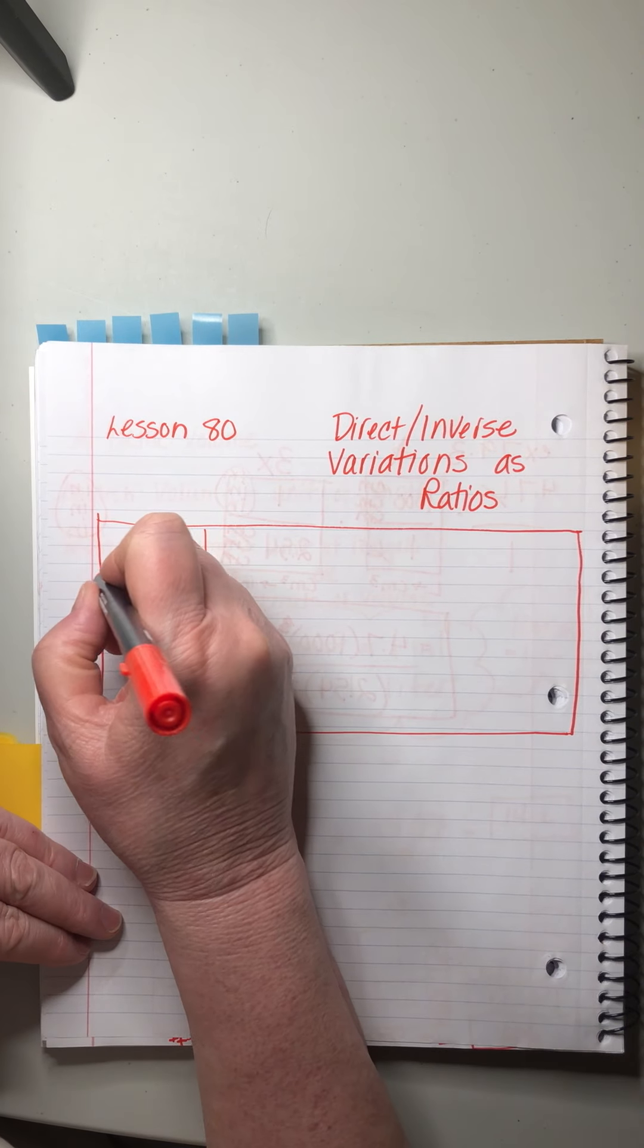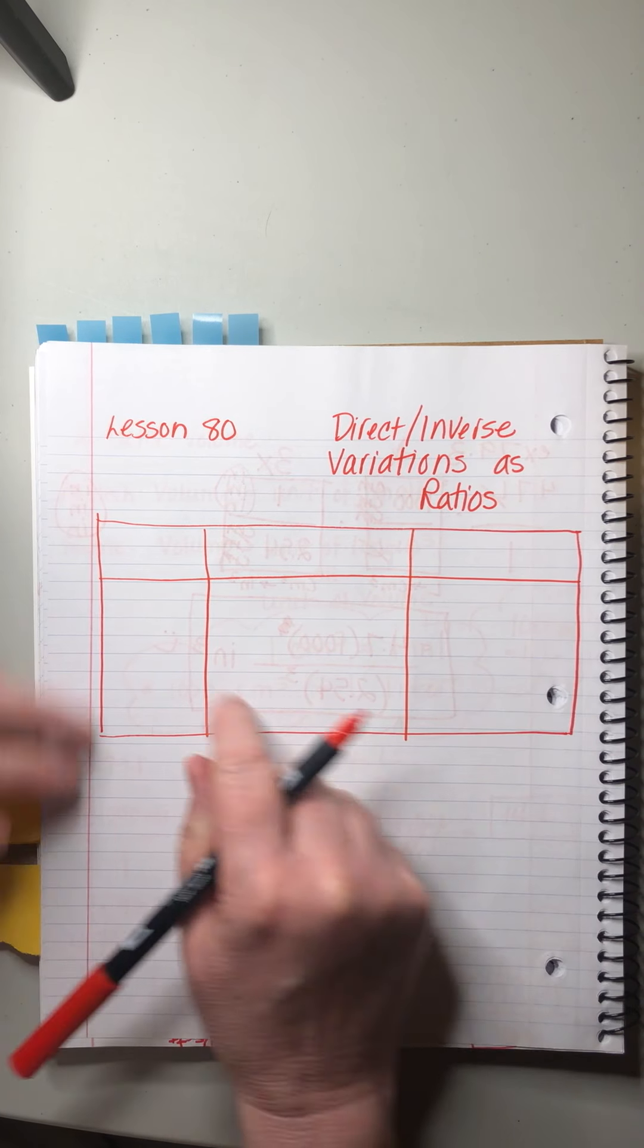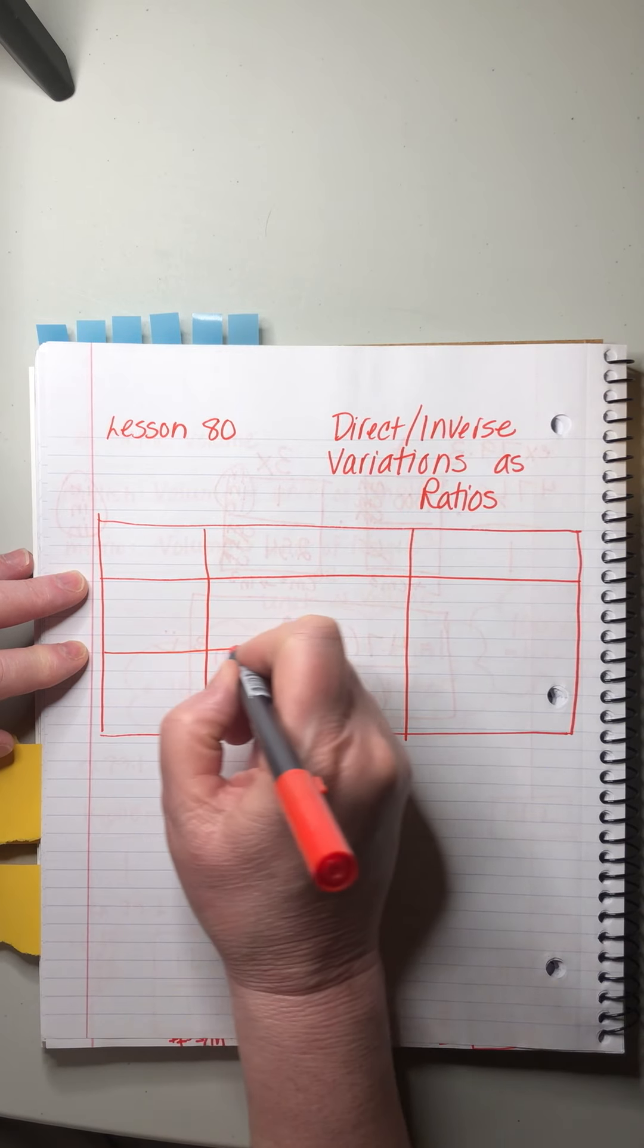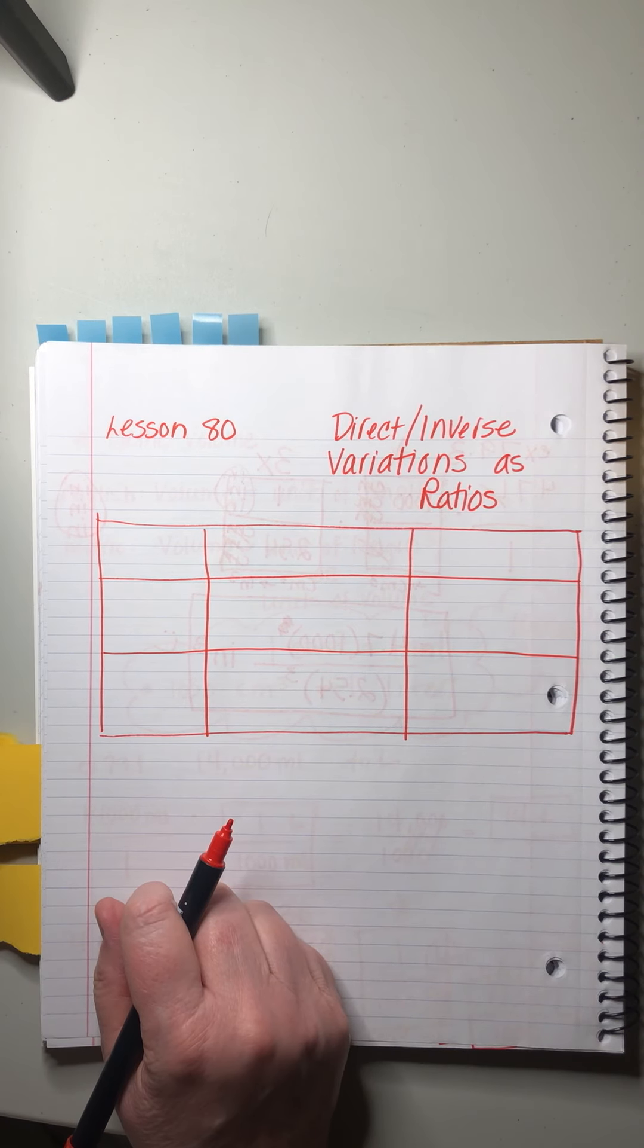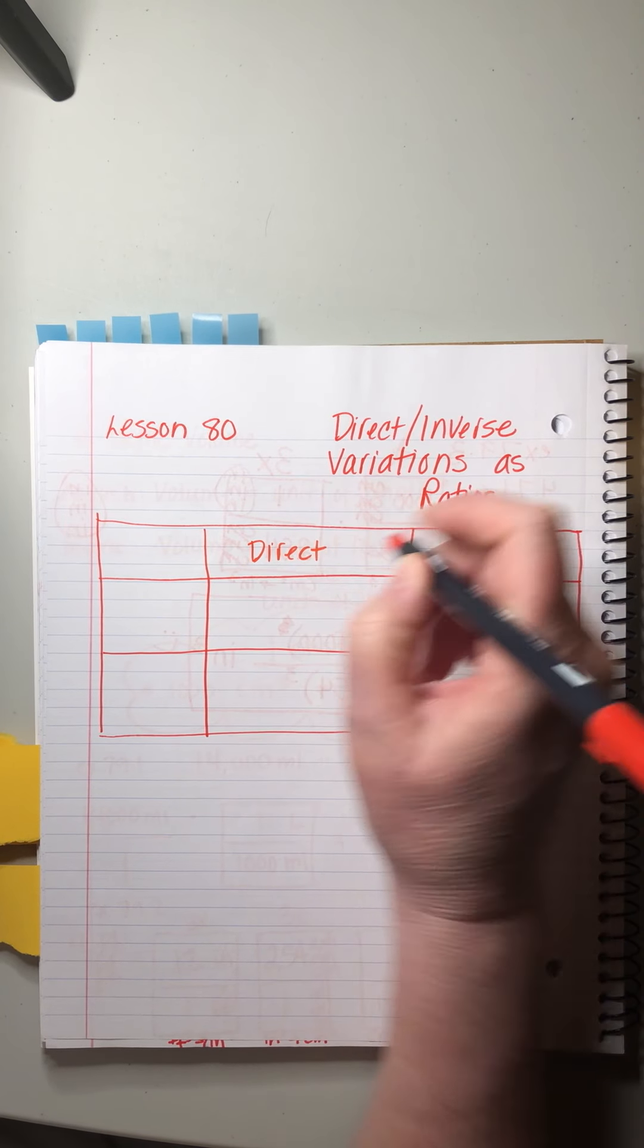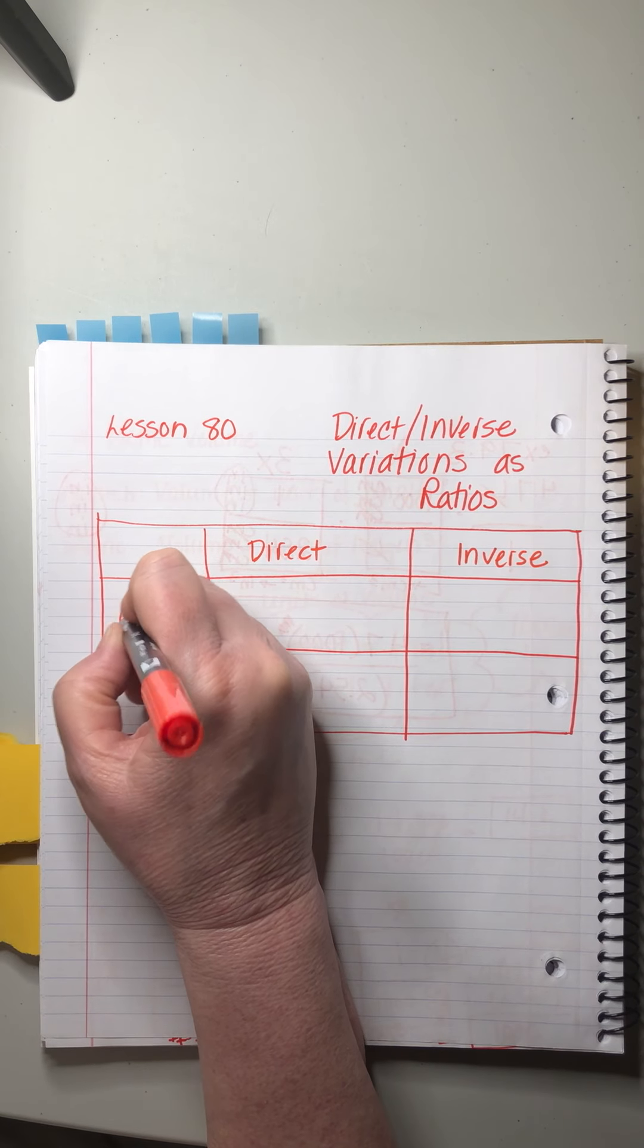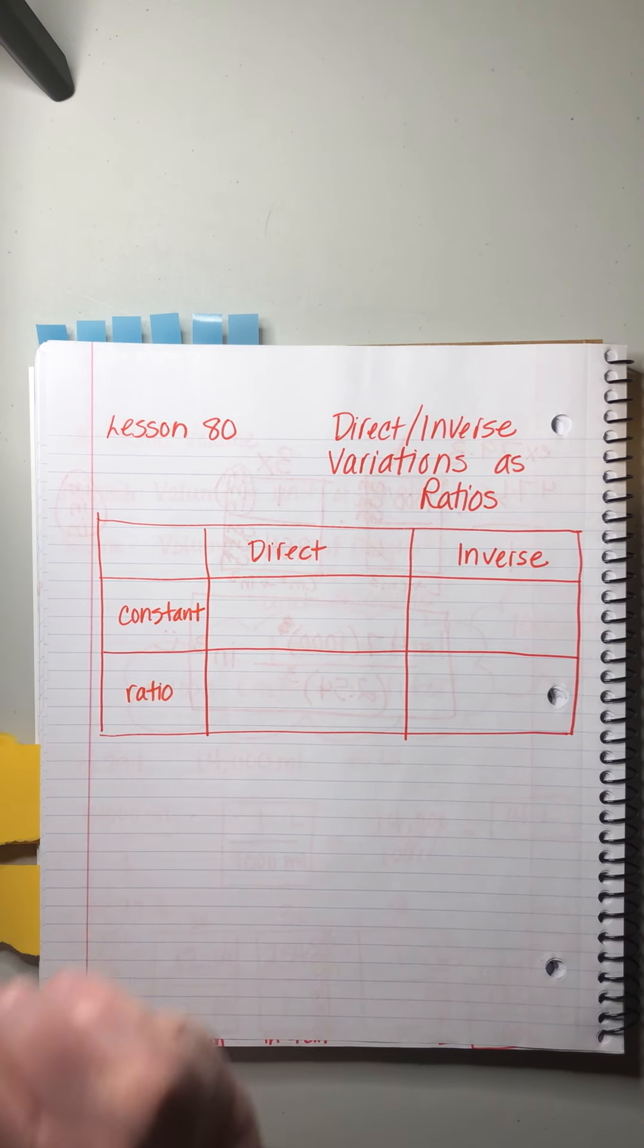Here's how I want it to look. Three columns, but you can make the first one a little bit more narrow and then make three rows and the first one can be a little bit more narrow. All right, direct, inverse, constant, and ratio.